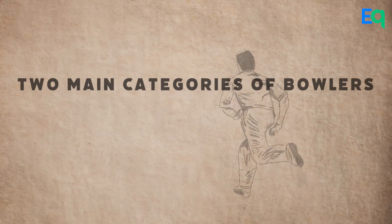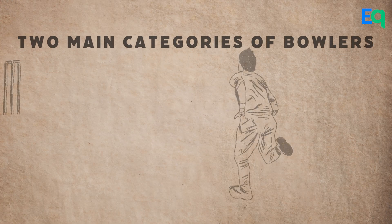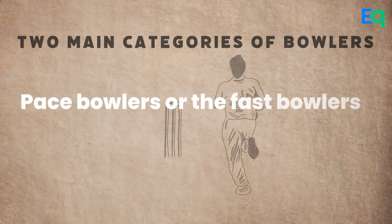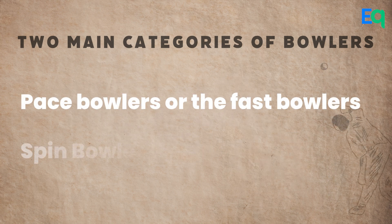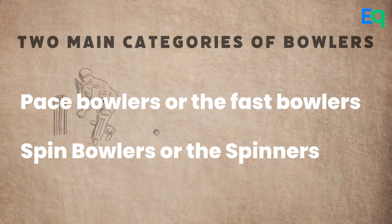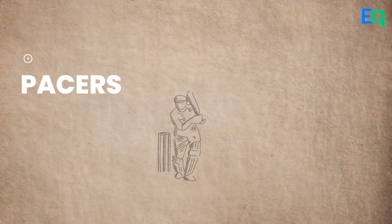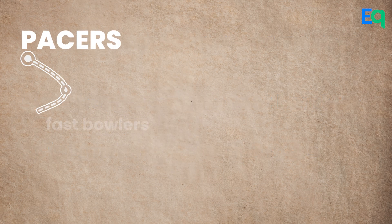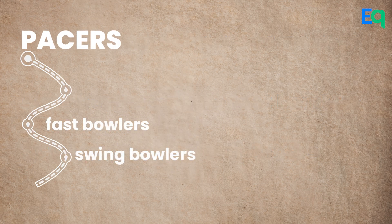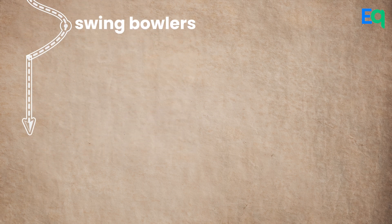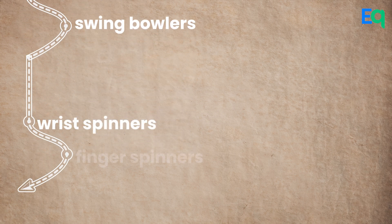In cricket, there are two main categories of bowlers. First, the pace bowlers are the fast bowlers, and second are the spin bowlers or the spinners. Pacers can be further divided into fast bowlers and swing bowlers, whereas spin bowlers can be further divided into wrist spinners and finger spinners.